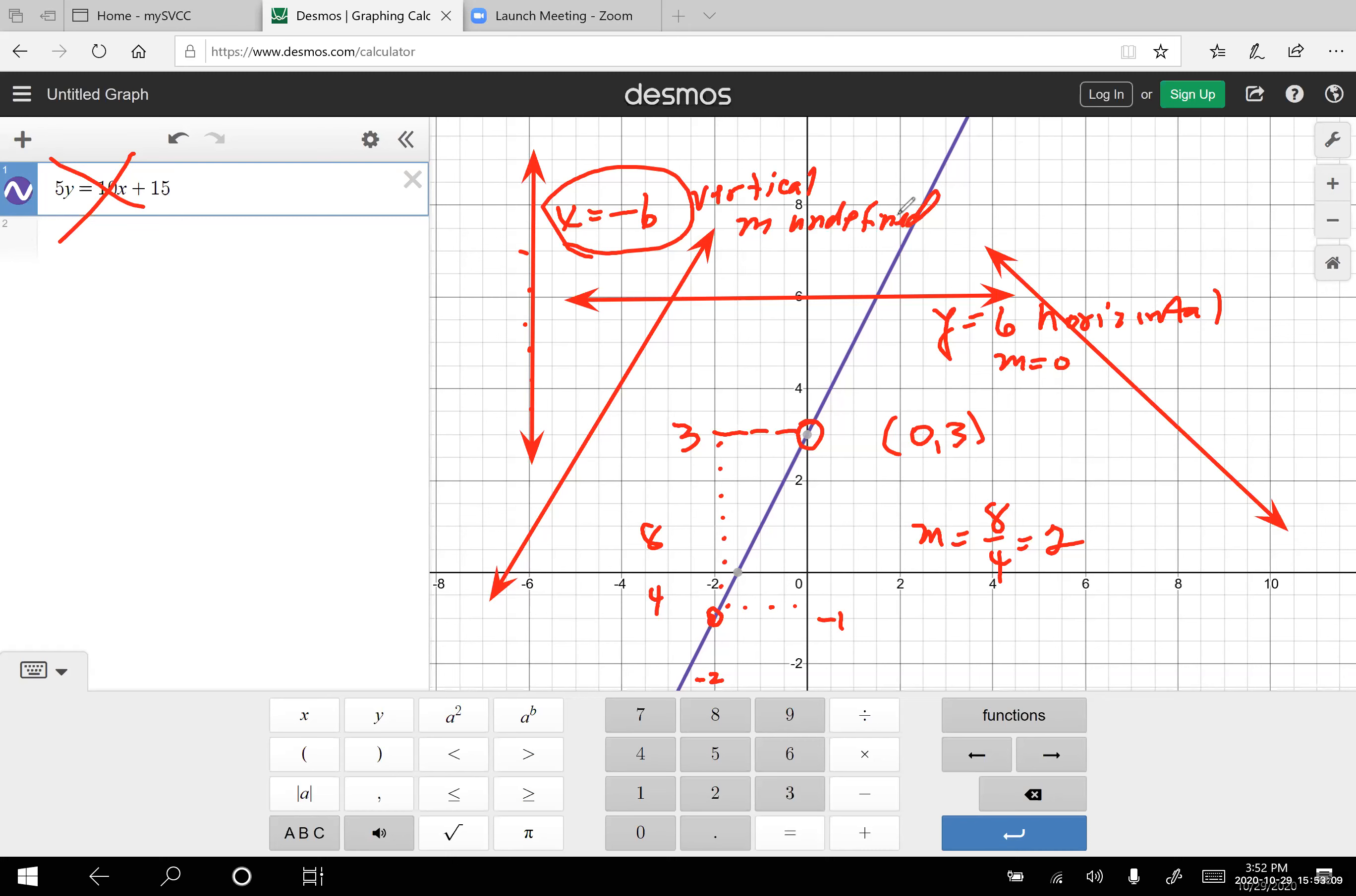And then you have everything in between, positive and negative. The steeper the line, the greater the slope. The lower the slope is, the flatter it is.